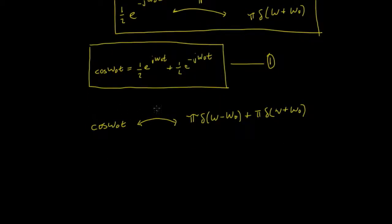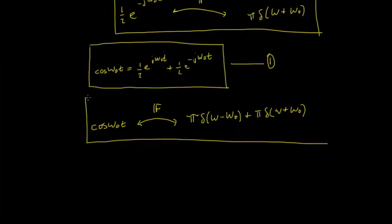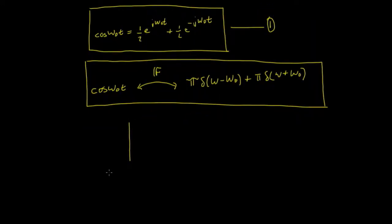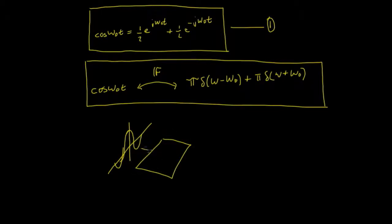That's one of the Fourier transform pairs we wanted to get. So we know what the Fourier transform of cos(ω₀t) looks like - the cosine function in the time domain, and when we do the Fourier transform it's equivalent to having two impulses shifted by omega₀, one at plus ω₀ and one at minus ω₀.